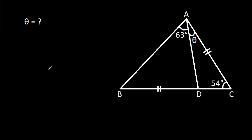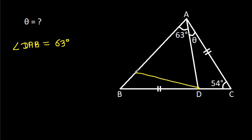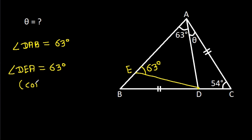So, we have angle DAB is 63 degrees, and from point D, we make a line DE such that angle DEA is also 63 degrees. This is our construction.